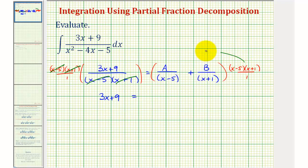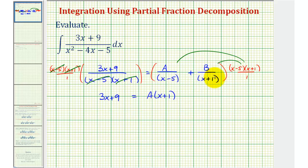On the right side, notice how the x minus five would simplify out, leaving us with A times the quantity x plus one. And then for the second product, the x plus one over x plus one simplifies out, leaving us with plus B times the quantity x minus five.